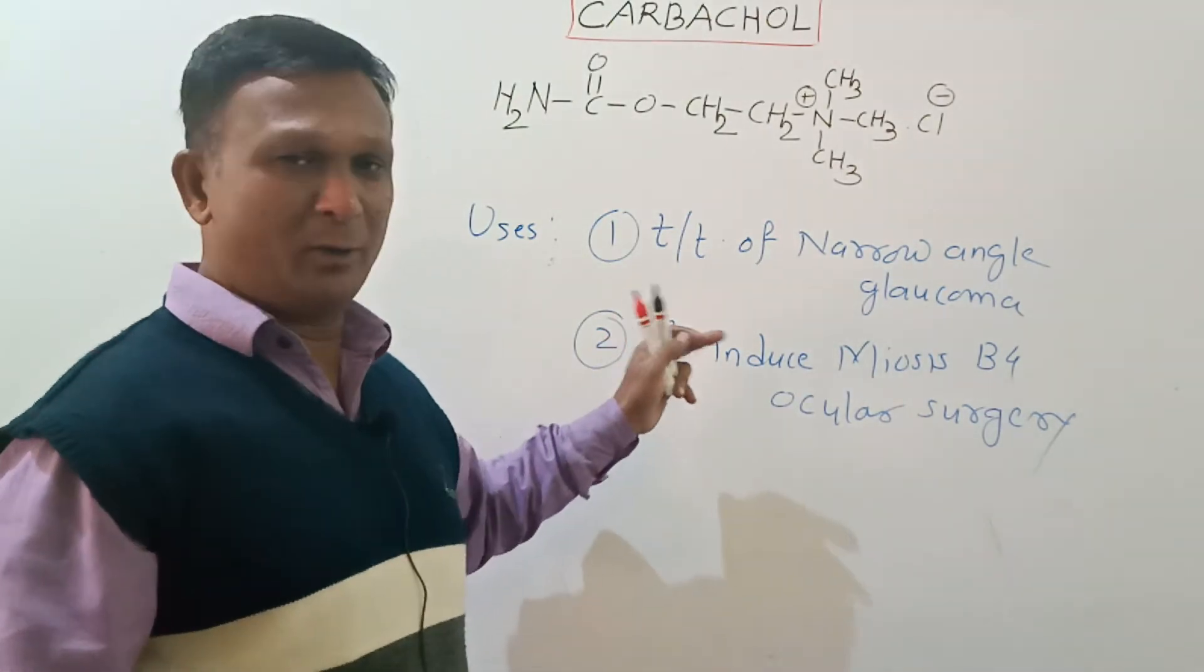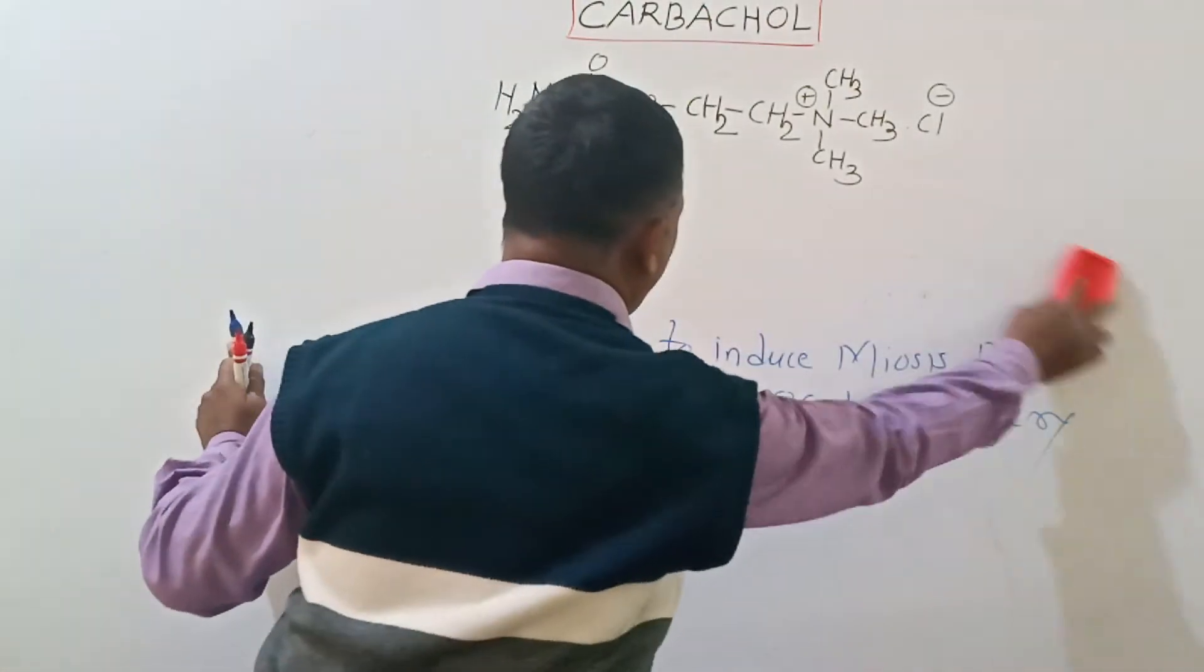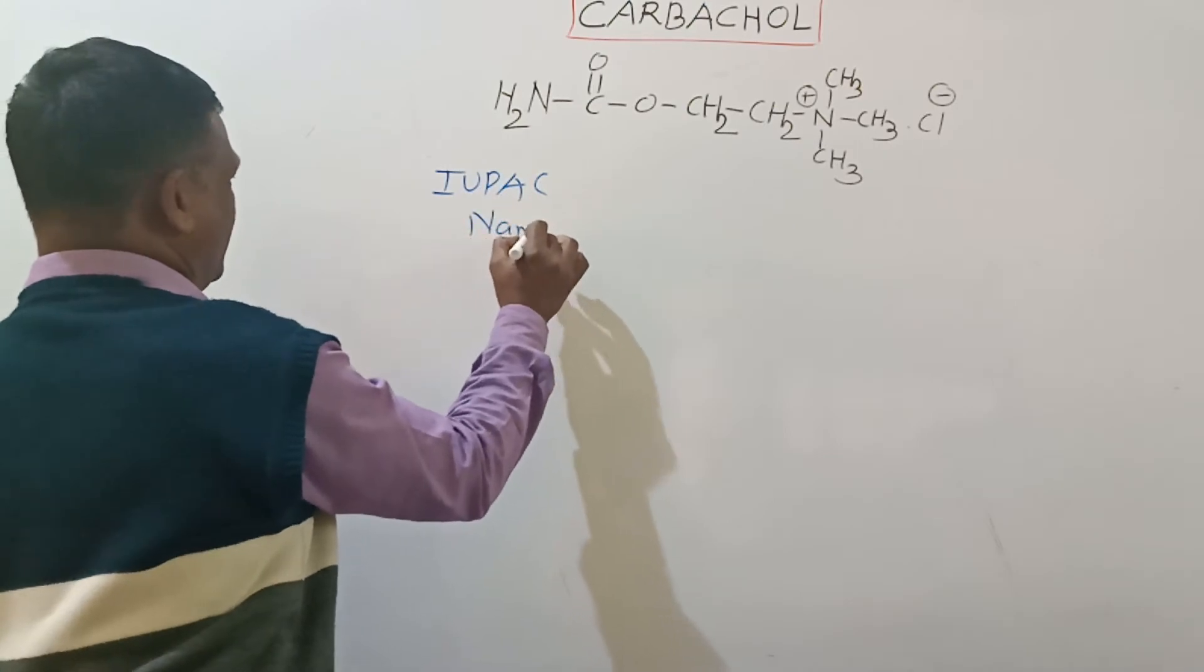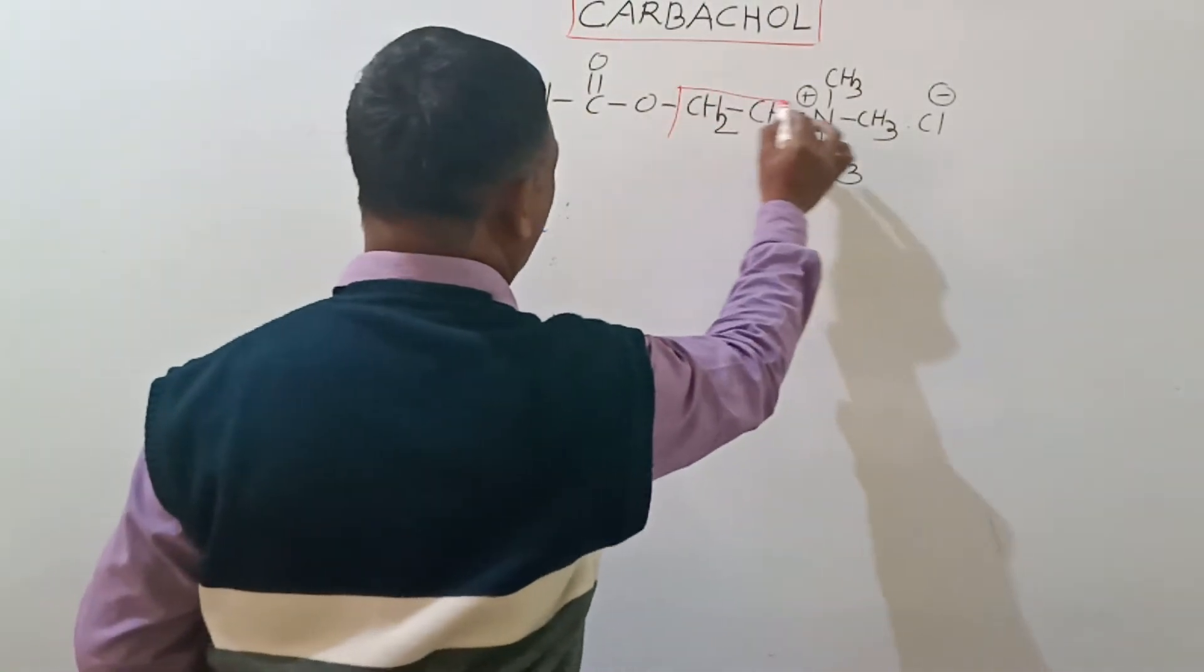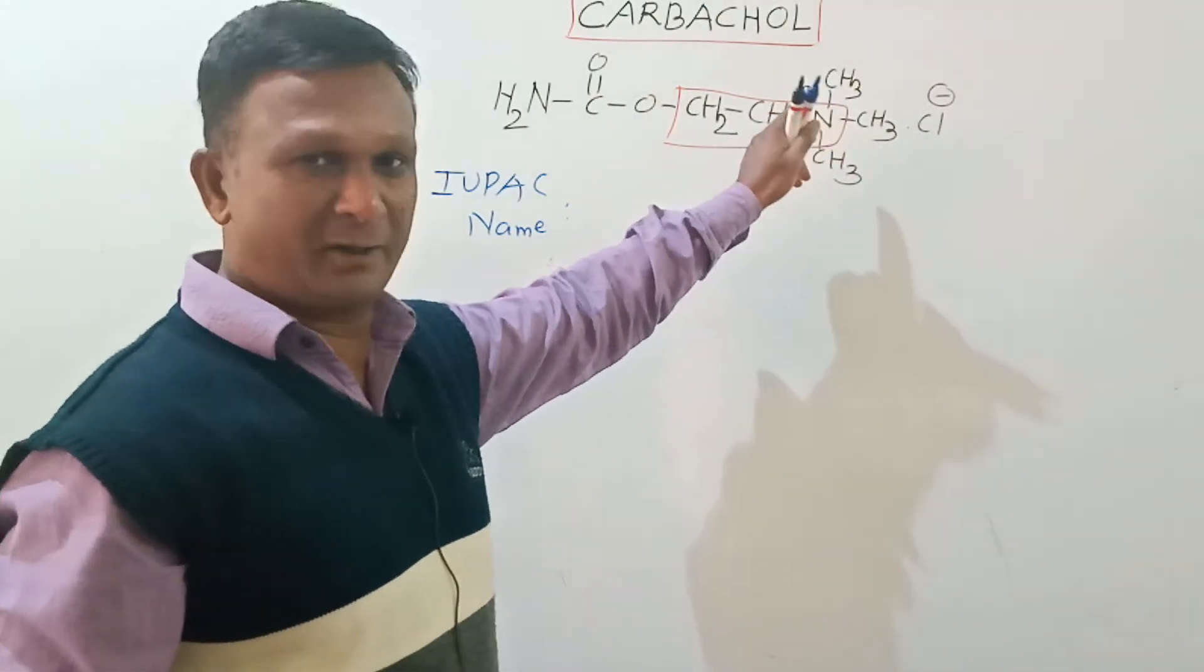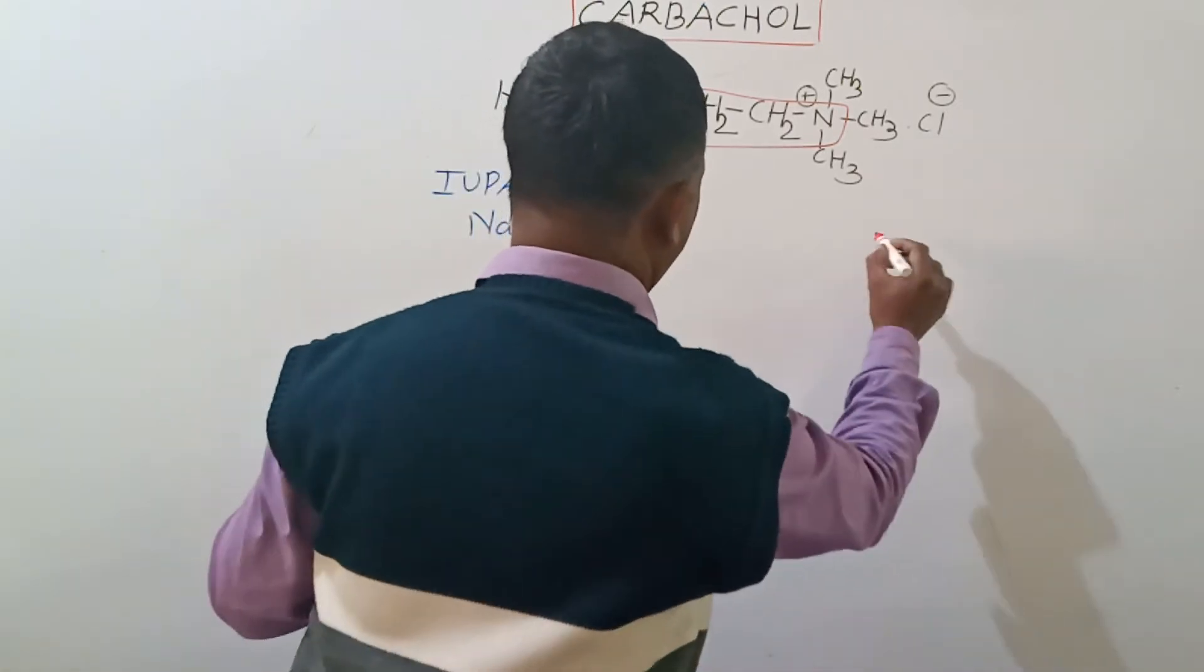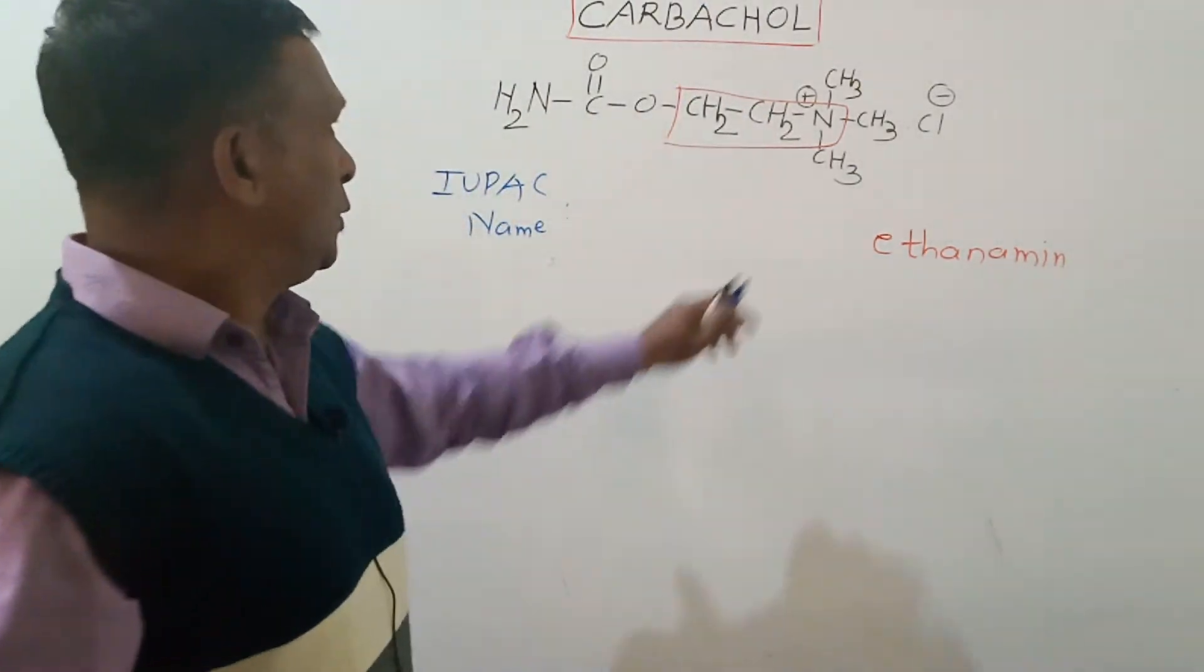Next, move on to the IUPAC name of this compound. For IUPAC nomenclature, the basic moiety will be this two-carbon chain attached with this nitrogen which is a part of quaternary ammonium salt. The name for this two-carbon chain along with the nitrogen is ethane amine.